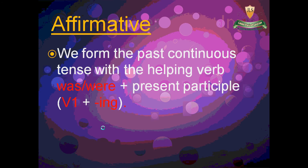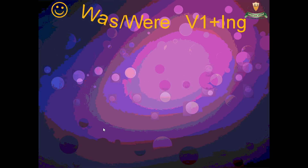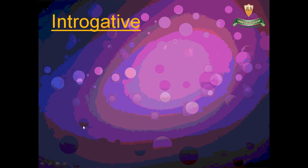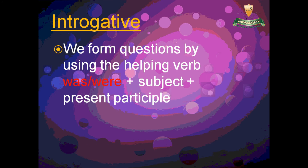We form the past continuous tense with the helping verb was or were, plus the verb plus -ing. I was going, you were going, he was going, she was going, it was going, we were going, you were going, they were going.